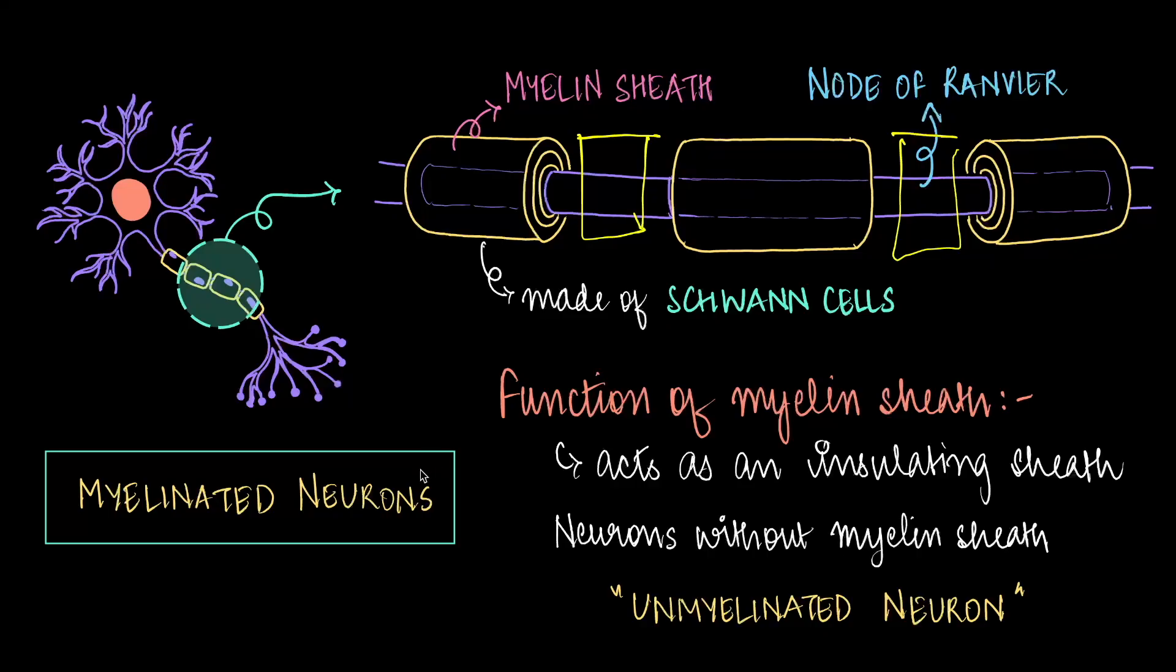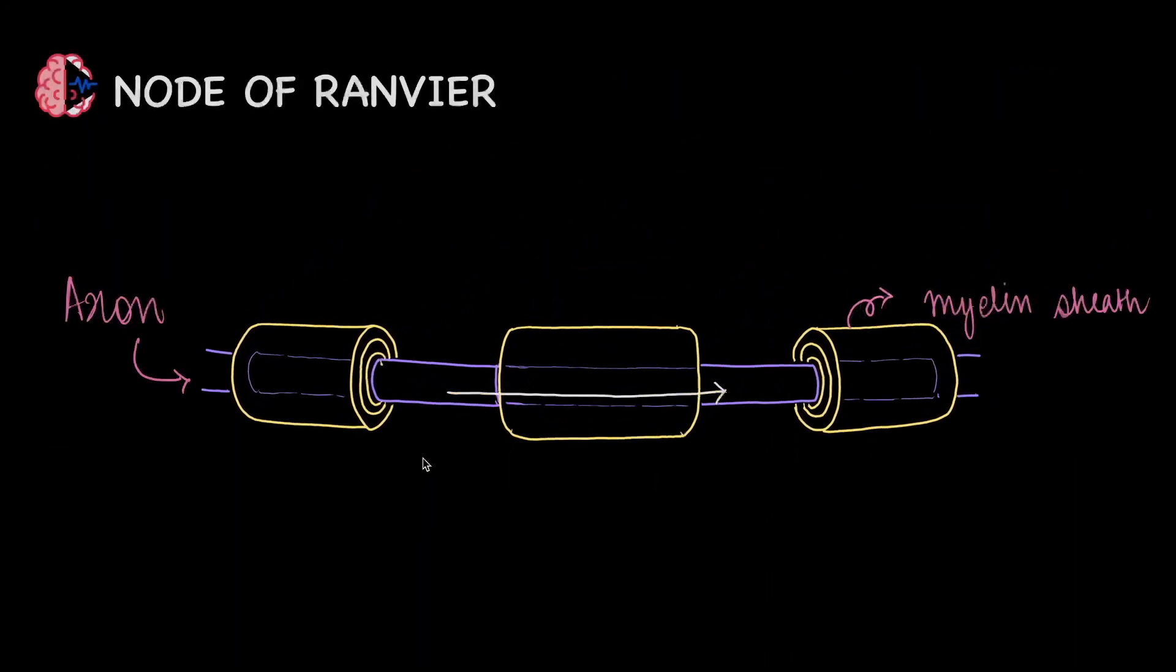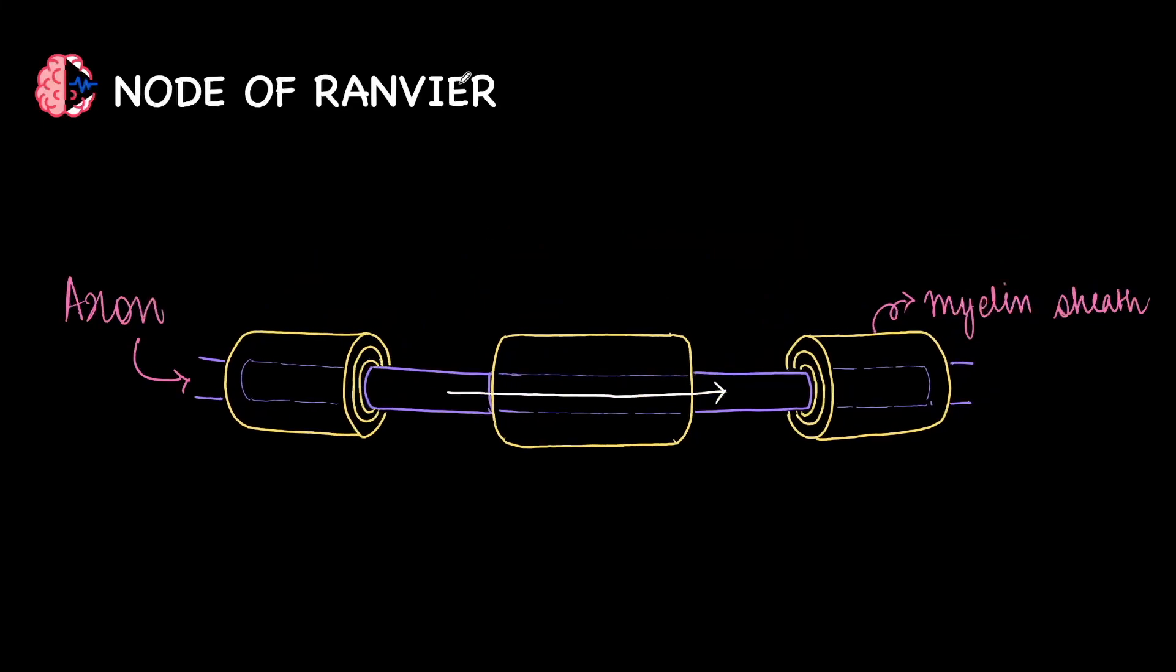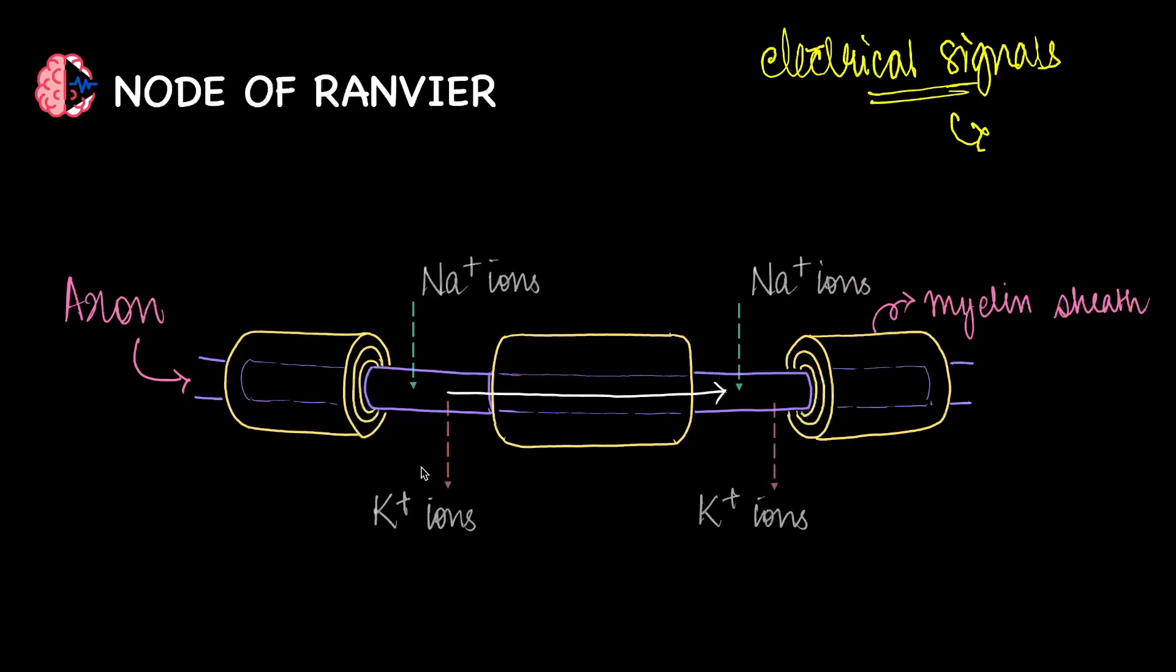Well we know that messages in the neuron travel in the form of electrical signals. Why do they travel in the form of electrical signals? It is primarily because of the movement of sodium and potassium ions through the neuron's membrane. And at each node, sodium and potassium ions keep moving in and out.